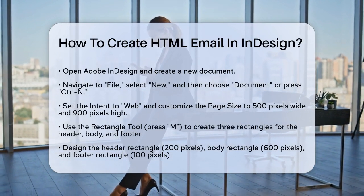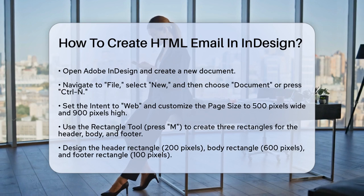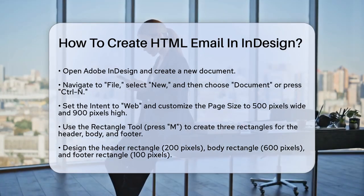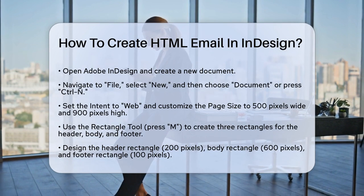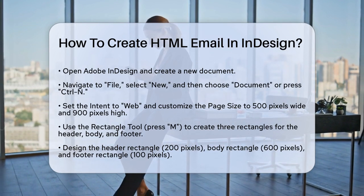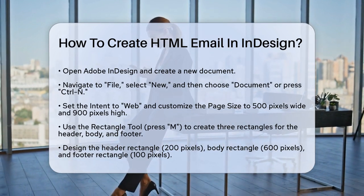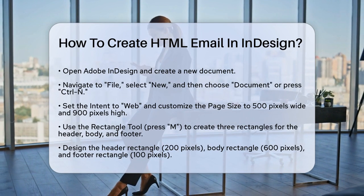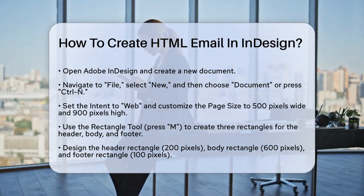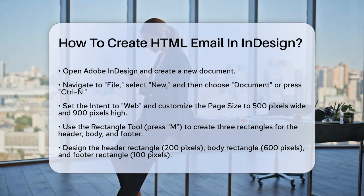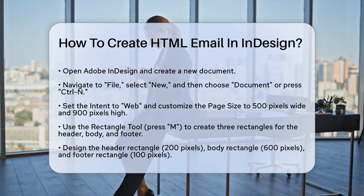First, open Adobe InDesign and create a new document. Go to File, then New, and select Document or press Ctrl-N on your keyboard. In the New Document dialog, select Web from the Intent drop-down menu. Set the page size to Custom and enter 500 pixels for the width and 900 pixels for the height. Click OK to save these settings and open your new document.